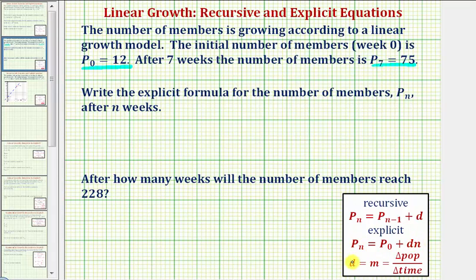We can also determine the common difference by determining the change in the number of members over the seven weeks divided by the change in time, which in this case would be the change in the number of weeks. We'll go ahead and show this both ways.